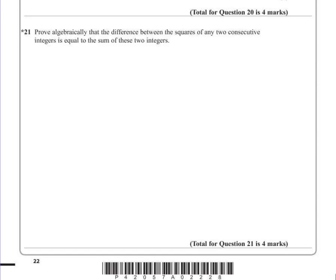Question 21: Prove algebraically that the difference between the squares of any two consecutive integers is equal to the sum of these two integers. It's got a star next to it, so it's all about the proof and our reasoning behind our answers.